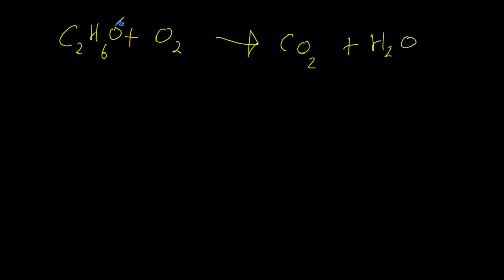There is a trick to this. Oxygen is present in everything here — in the ethanol, in oxygen gas, in carbon dioxide, and in water — so it's going to be really difficult to balance if we start with oxygen. What we're going to do is ignore the oxygen for now and balance everything else first. Carbon only appears on the left in ethanol and only on the right in carbon dioxide. So the number of carbons in ethanol must equal the number of carbons in carbon dioxide. There are two carbons in ethanol and only one in CO₂, so we need two CO₂.